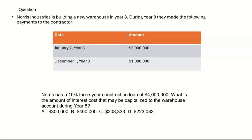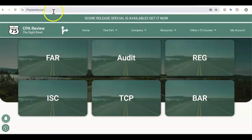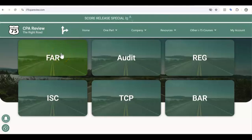Let's try this. Norris Industries is building a new warehouse in year eight. During year eight they made the following payments to the contractor: January 2nd, year eight — $2 million; December 1st, year eight — $1 million. Norris has a 10%, three-year construction loan of $4 million. What's the amount of interest cost that may be capitalized to the warehouse account during year eight? If you think you know, leave me the answer in the comments. If you found this video helpful, go to i75cpareview.com and get on I-75 with me, Darius Clark.